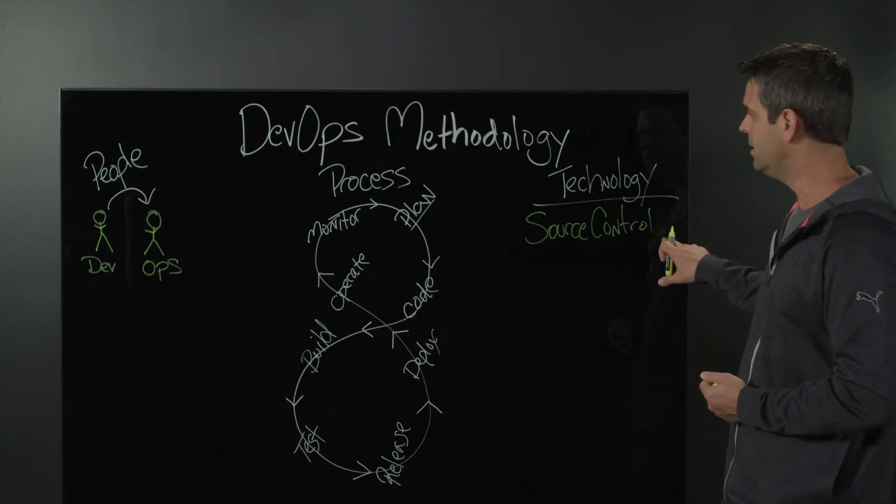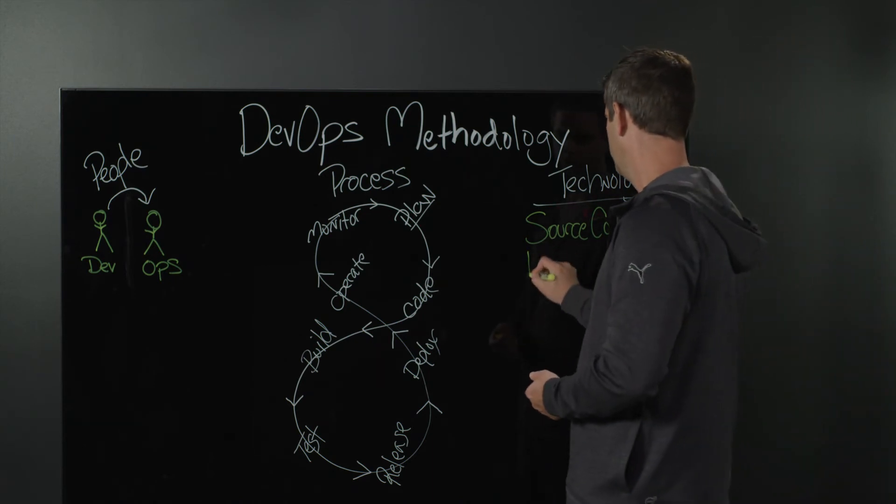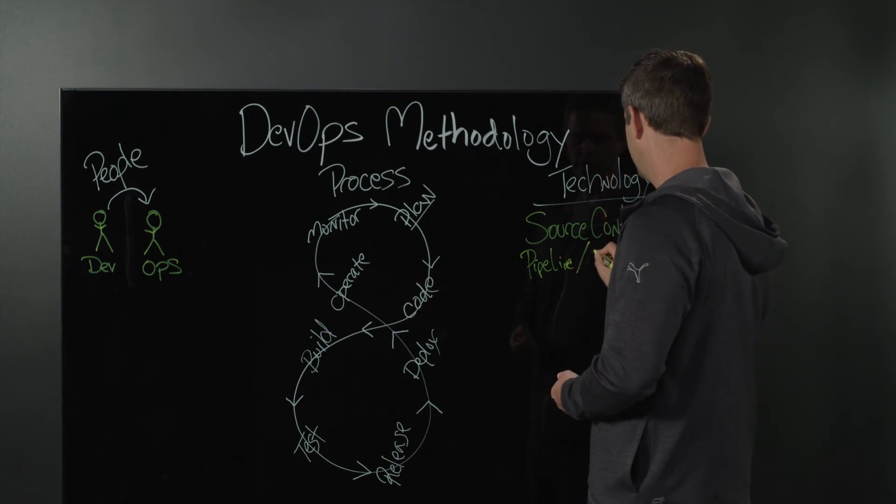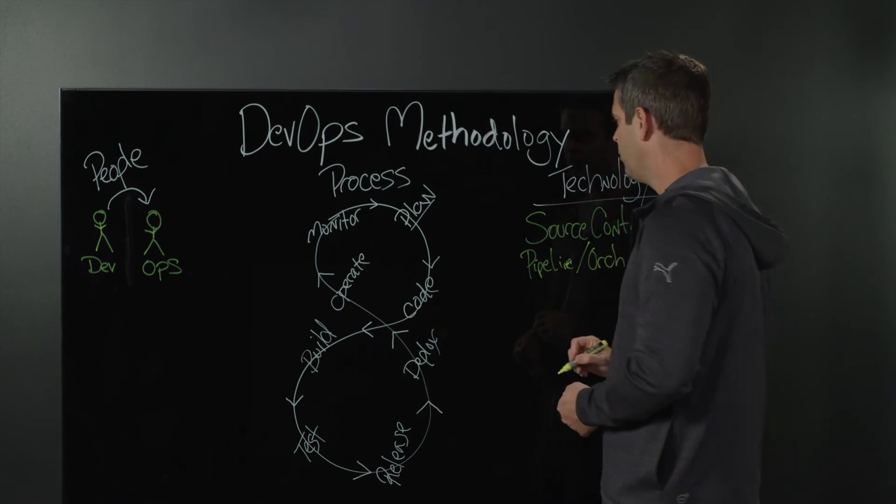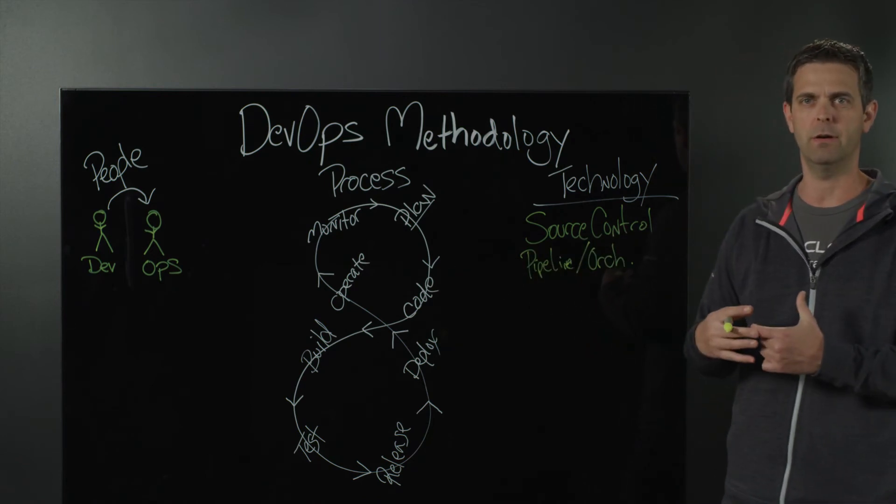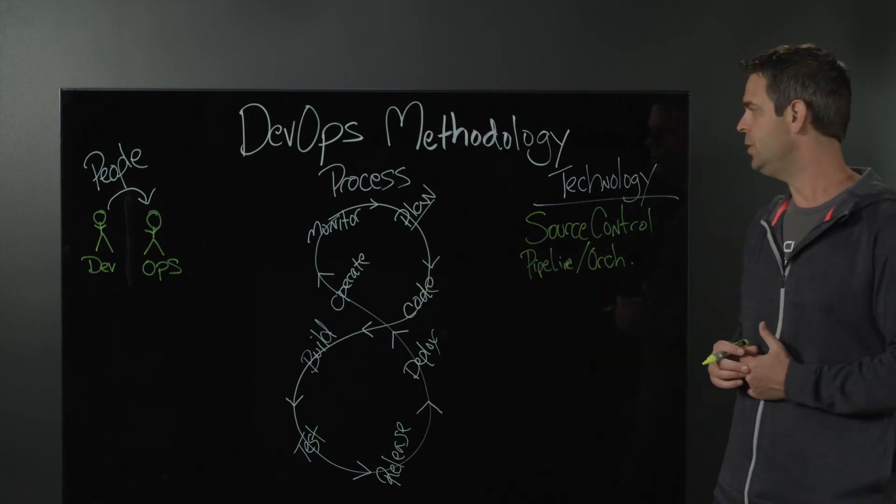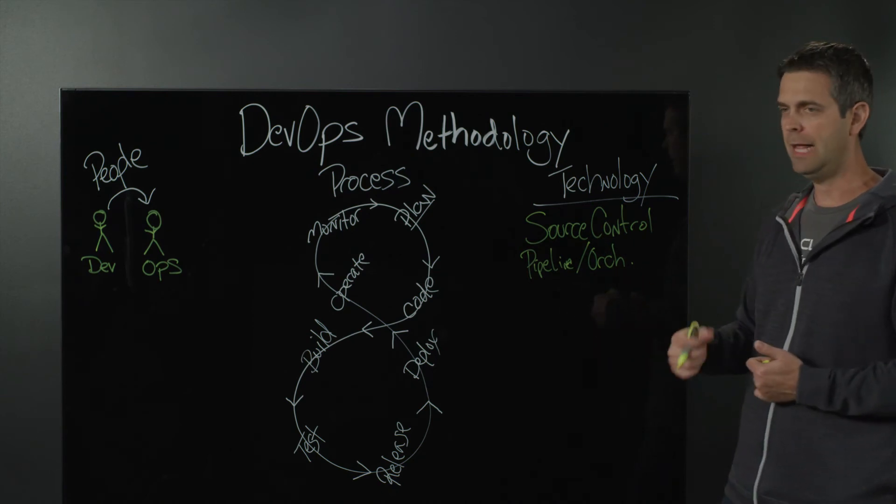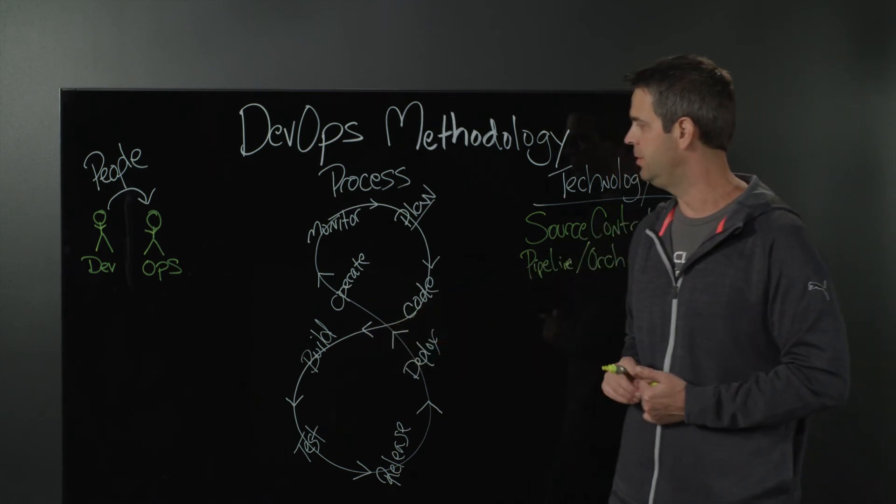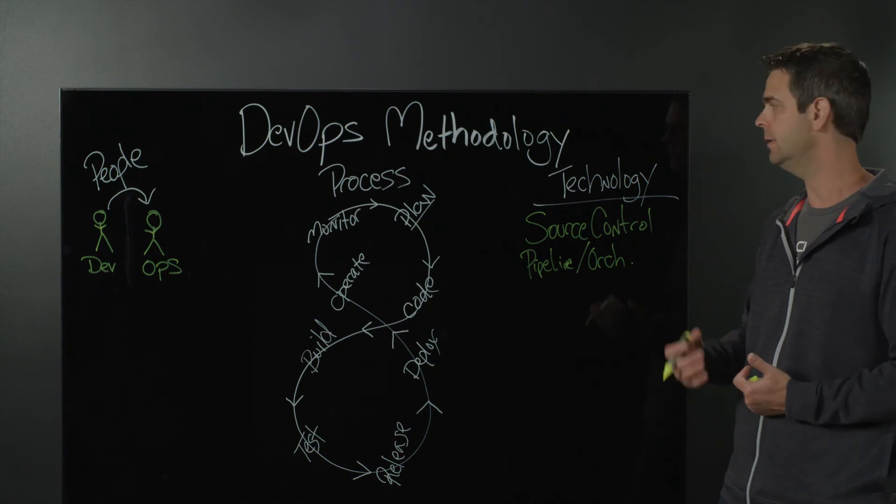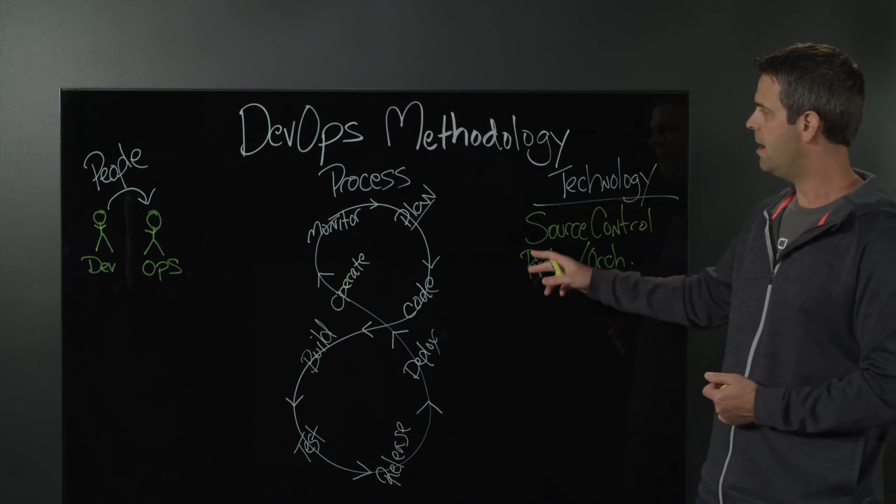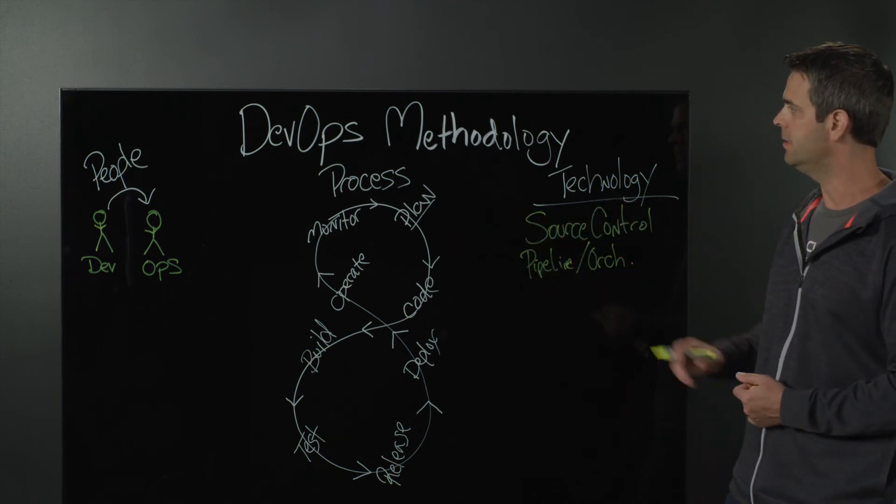The next piece is going to be some sort of pipeline or orchestration tool. What that's going to do for us is allow us to tie many or all of these individual components together into a stream of continuous function, allowing us to define the sequence of events. What happens if any one of these phases were to unfortunately fail? How do we respond, react, and move forward? A good pipeline or orchestration tool will help us to define and execute all of these steps or all of the phases in this process flow.